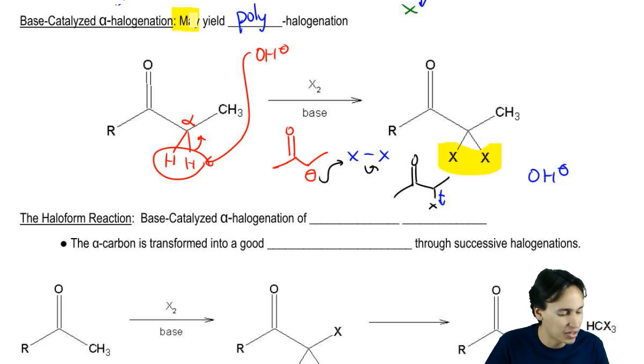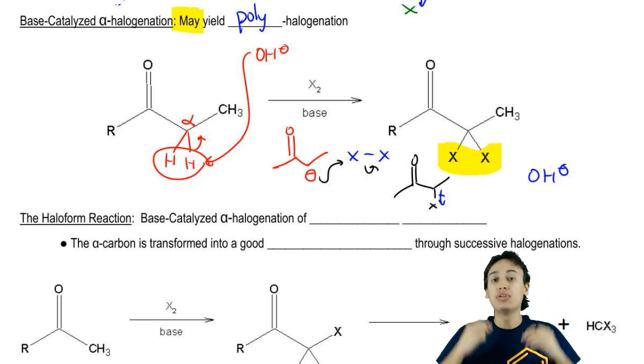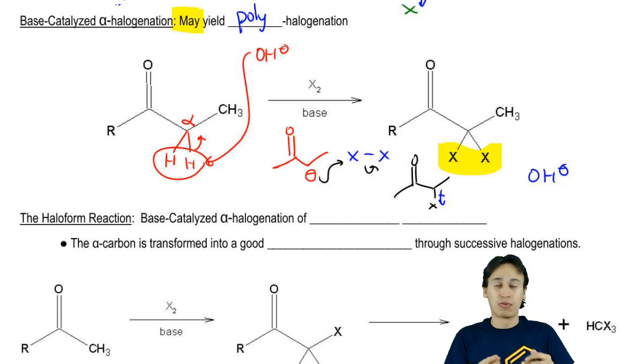Now the only reason that I put may yield, not will yield, is because obviously you need multiple alpha protons in order for it to get polyhalogenated. If you only have one, then you're only going to substitute once. But you can basically continue to react, continue to keep reacting until you're out of alpha protons. Interesting, right? Cool, guys. In the next video, I want to show you an application of alpha halogenation called the haliform reaction.